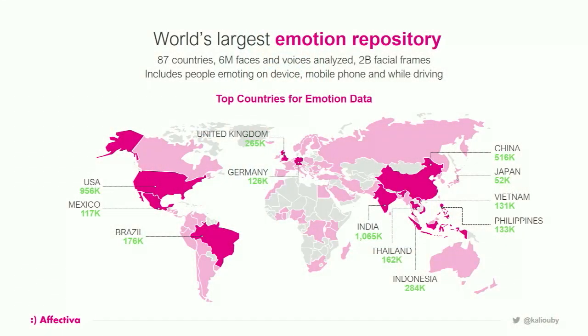We're in the process of improving these algorithms. We've collected about six million faces and speech or audio sessions from 87 countries around the world, and this data set serves as our training and validation data set. It's all spontaneous — the examples shown were obviously acted because we don't have permission to share a lot of our data. But the data we have is spontaneous people emoting on their phones or driving around Tokyo, or video interviews. It's very important that this data is natural and collected in the wild.